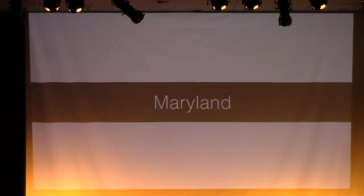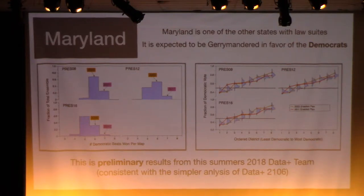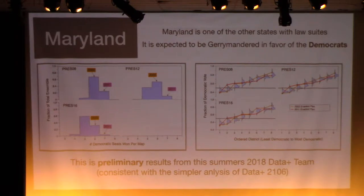We also looked at Maryland — more preliminary results. The 2011 map is the one under question. It doesn't do as bad a job as North Carolina, but you see this same kind of jump. This is supposed to be gerrymandered in favor of the Democrats, so we're looking at the far left side. The dots of the far one are much depressed. In some of these elections, it would have been reasonable that two Republicans would have been elected, but the map is set up to only allow one to be elected. So there's also gerrymandering in Maryland in the other direction.